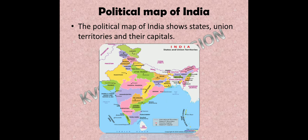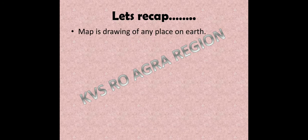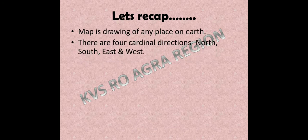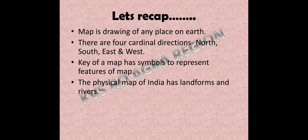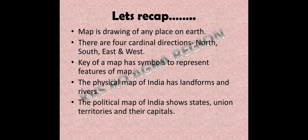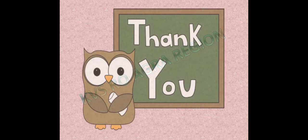Let's recap. A map is a drawing of any place on earth. There are 4 cardinal directions: North, South, East, and West. The key of a map has symbols to represent features of the map. The physical map of India has landforms and rivers. The political map of India shows states, union territories, and their capitals. Thank you.